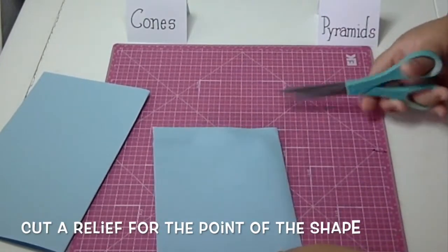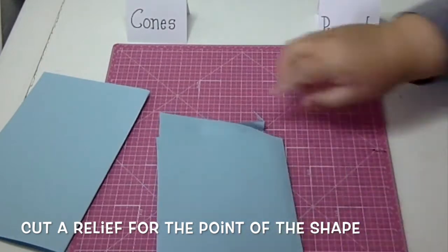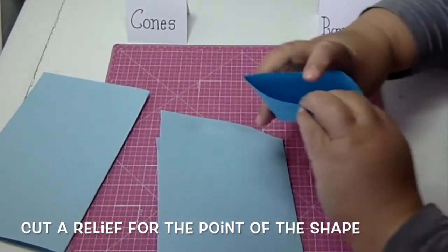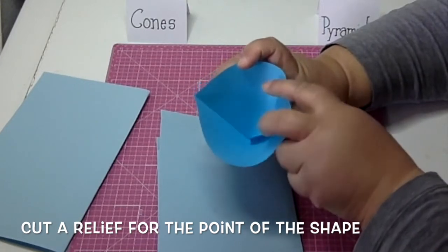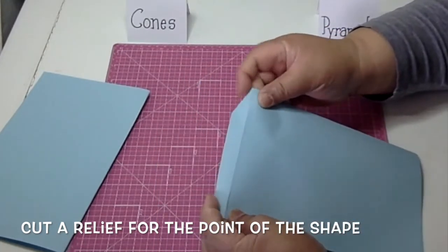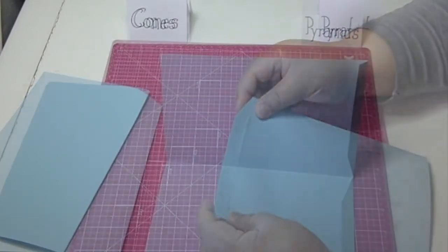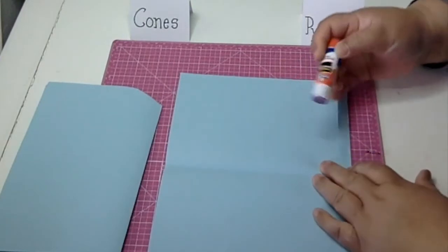I'm going to cut a relief for the point of the shape. It's a little diagonal cut from that fold mark. See if you see in the shape here, the point will need extra room at the top, so that's why I made this diagonal cut. I'll call it a relief.